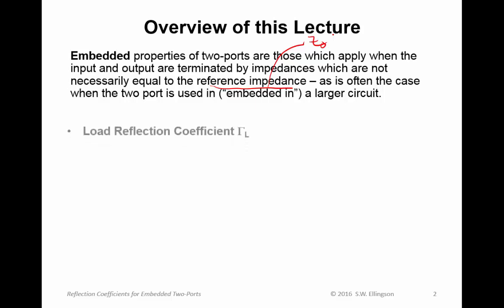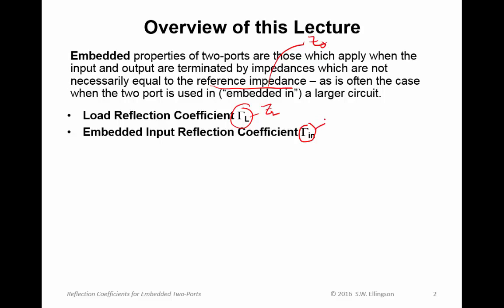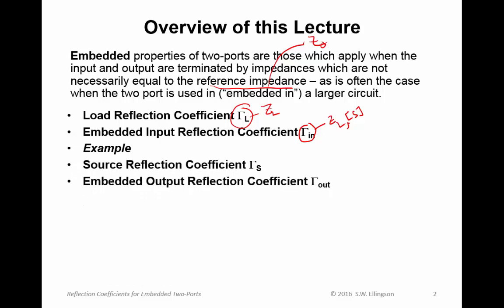Here's what we want to talk about. First, the load reflection coefficient, gamma sub L. This is just another way of talking about Z sub L, the load impedance — it really doesn't have anything to do with the two port. Then we get to the embedded input reflection coefficient, gamma in, which will depend on the load impedance as well as the S parameters of the two port. Then the source reflection coefficient and the embedded output reflection coefficient, gamma S and gamma out respectively — these are just symmetrical concepts relative to the input quantities.